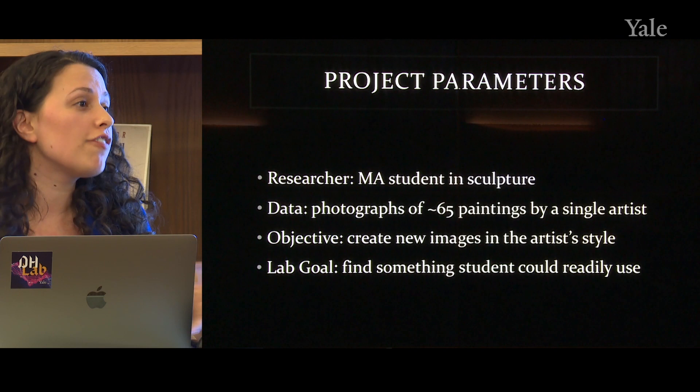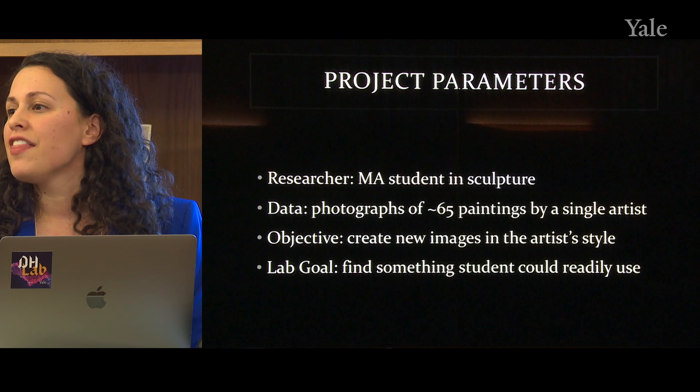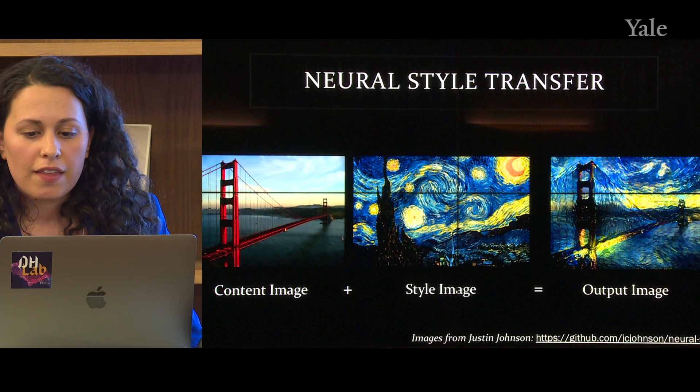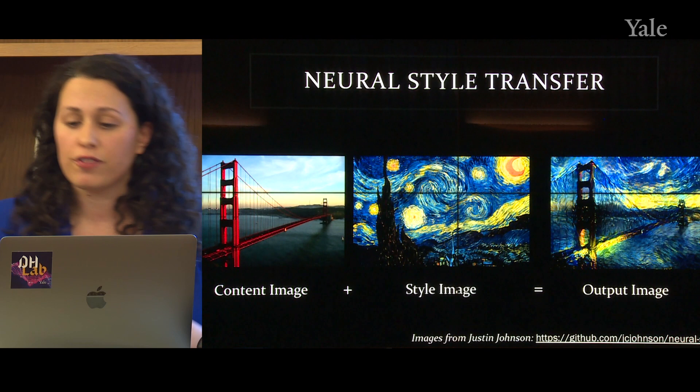So we wanted to find something that could at least get her started in thinking along these computational lines — a first pass for this project. Neural style transfer was the approach that we decided we would take. This is where you are combining the content of one image with the style of another image by way of convolutional neural networks, and we were going to use the code base produced by Justin Johnson. There's his GitHub link, and I'll post the link again later if you're interested.